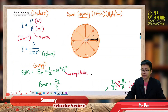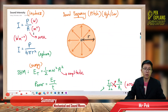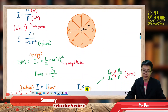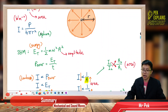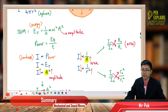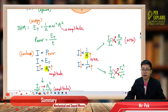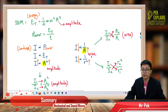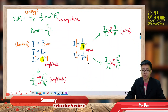That's all for intensity. Intensity is power over area. Power can be represented by energy, and energy can be represented by amplitude. So intensity is proportional to amplitude squared. Intensity is inversely proportional to the area, and intensity is also inversely proportional to the distance squared.